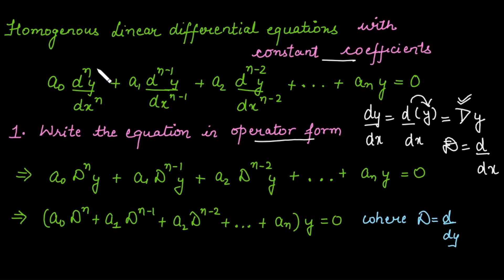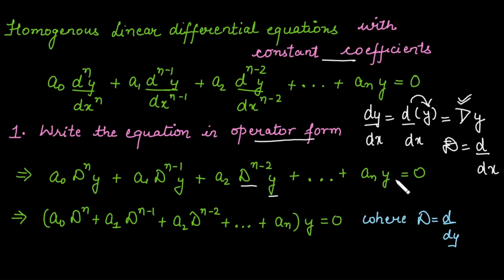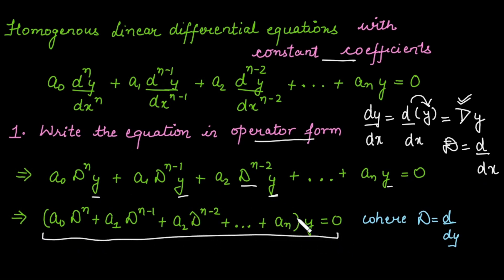For the nth derivative we write D raised to power n acting on y, for the (n−1)th derivative we write D raised to power n−1 on y, and so on. Where no derivative is taken, we put y as it is. We can then factor out y, giving us an operator expression of the form f(D) times y on the left-hand side, where capital D represents differentiation with respect to x.